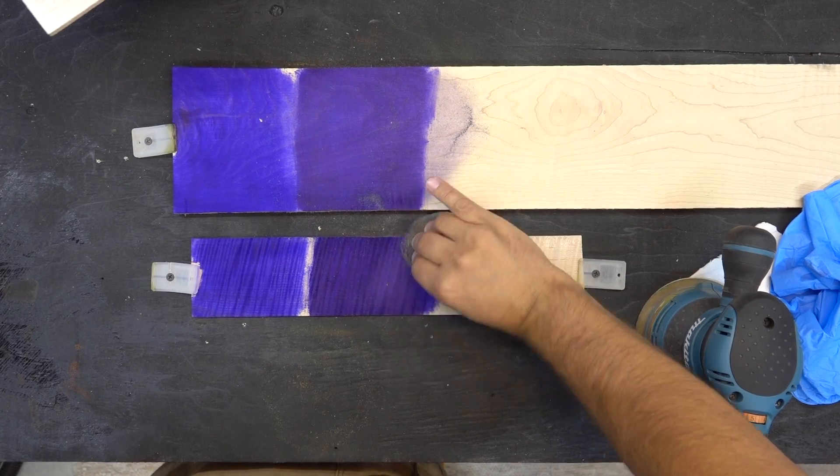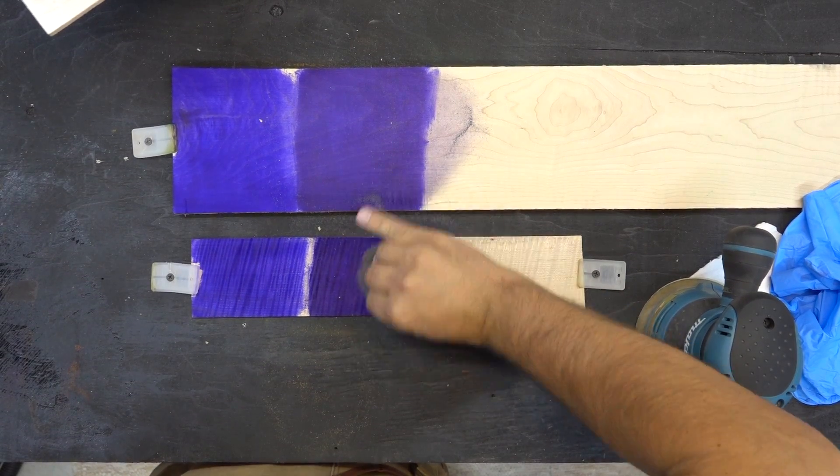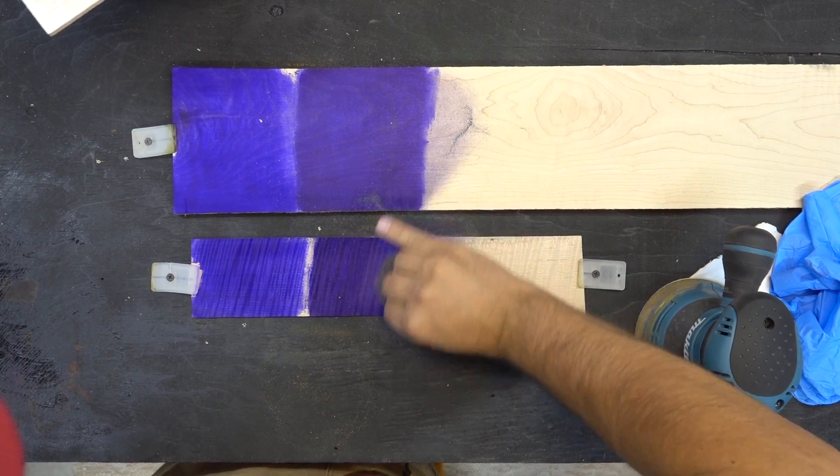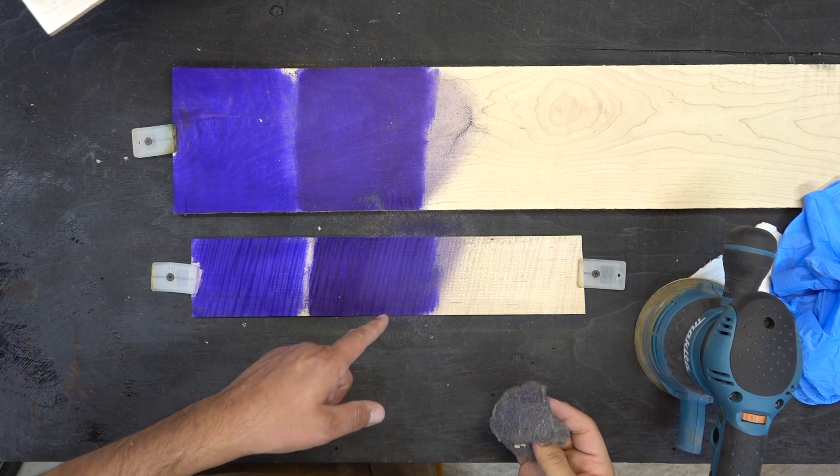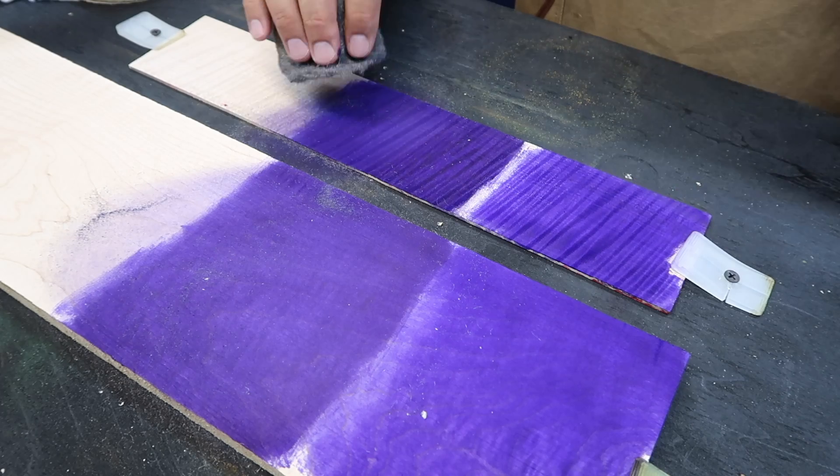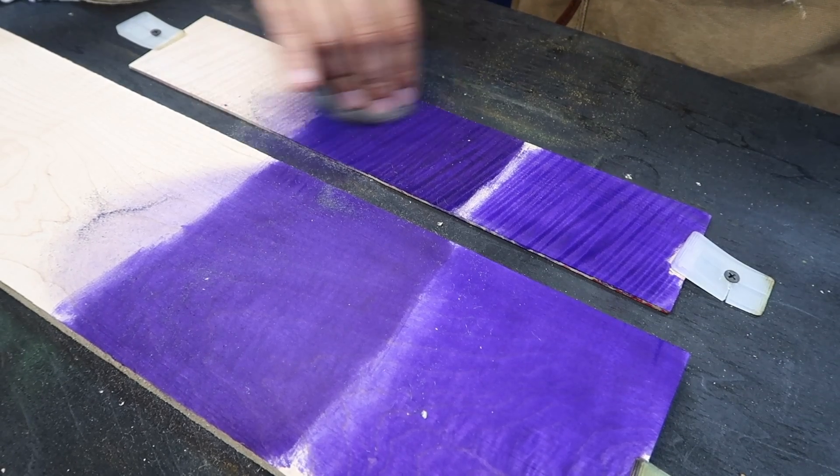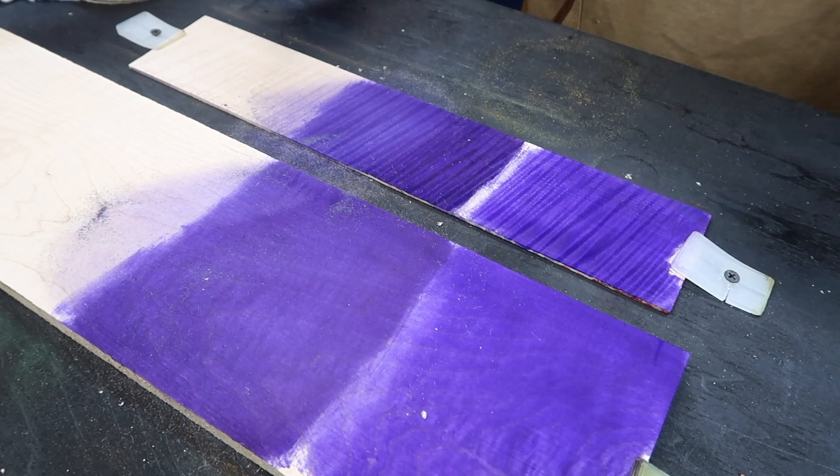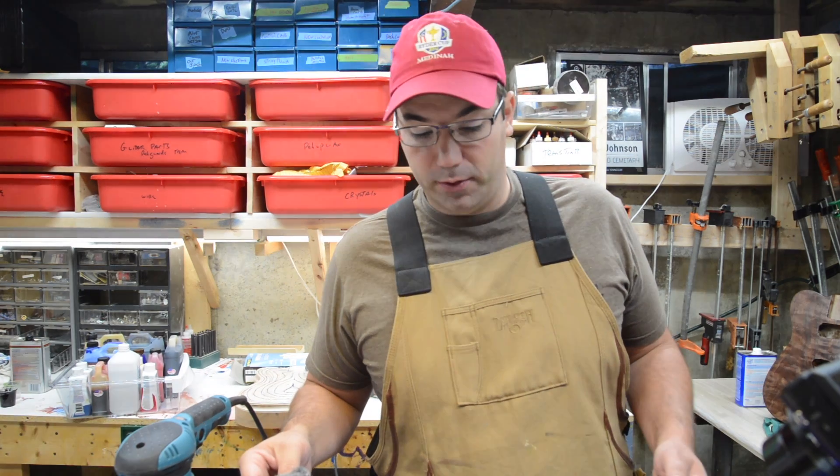So if I'll just do it on this side here, it just lightens it up enough without actually having to sand it, and that just takes off sort of the top layer of color.